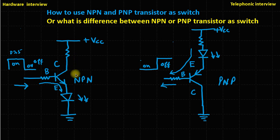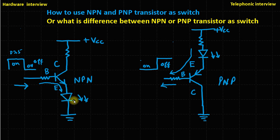In both conditions the load will work — whether you connect it at the emitter or the collector. But the base current will not flow through the load when it is connected at the collector. So the load current will be less, because it does not include the base current.